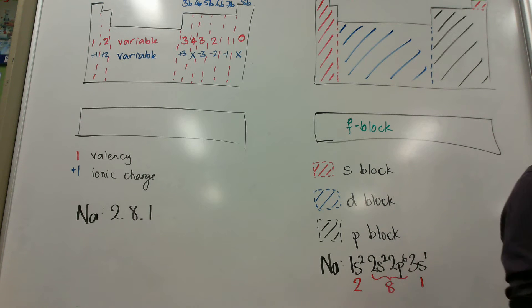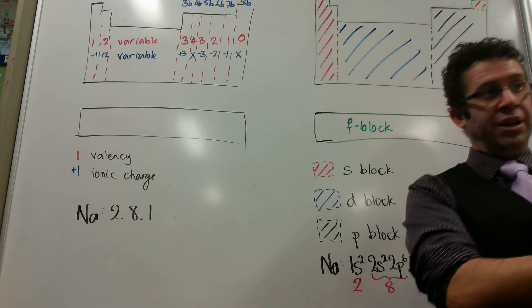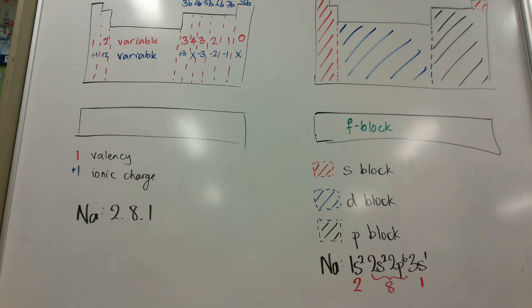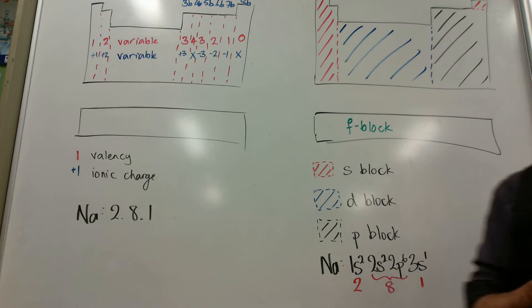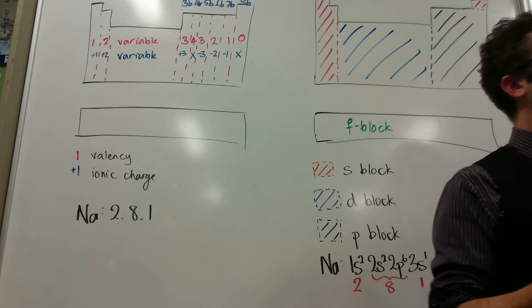And Mendeleev put them in these groups because they all had very similar chemical properties particularly. And that was a really clever idea because it allowed him to predict some elements that hadn't been discovered yet.